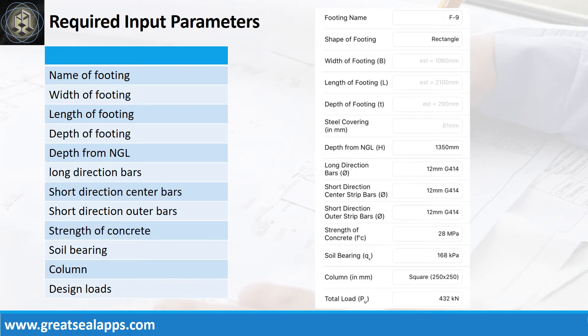Enumerate input parameters required. Footing name F9, shape of footing rectangle, depth from natural grade line 1350mm, long direction bars 12mm bar at grade 414, short direction bars 12mm bar at grade 414, strength of concrete 28 MPa, soil bearing capacity 168kPa, column size 250mm by 250mm and factored actual load of 432kN.